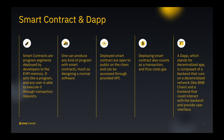Next, smart contracts and dApps. Smart contracts are program segments deployed by developers to the EVM memory. They act like programs, and any user is able to execute them through transaction requests. You can produce almost any kind of program using smart contracts, much like designing normal software. Deployed smart contracts are open to the public on the chain and can be accessed through provided APIs. Running these programs will ultimately change something on the smart contract — you call a function that changes the state of the virtual machine. Deploying a smart contract also counts as a transaction because you change what is running in the memory of the EVM, and thus it will cost a gas fee.